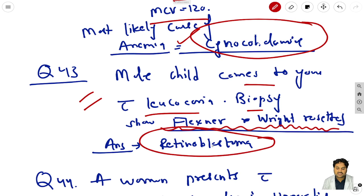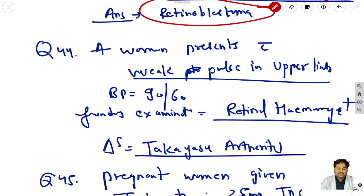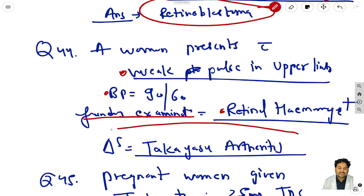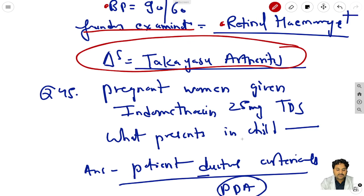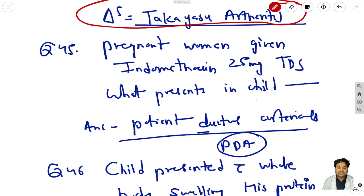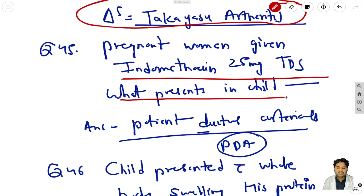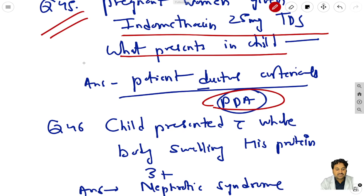Question 44: a woman presents with weak pulse in the upper limb, BP 90/60, and fundus examination shows retinal hemorrhages - the diagnosis is Takayasu arteritis. Question 45: a pregnant woman given indomethacin 25 mg TDS - once the child is born, the child presents with patent ductus arteriosus (PDA).